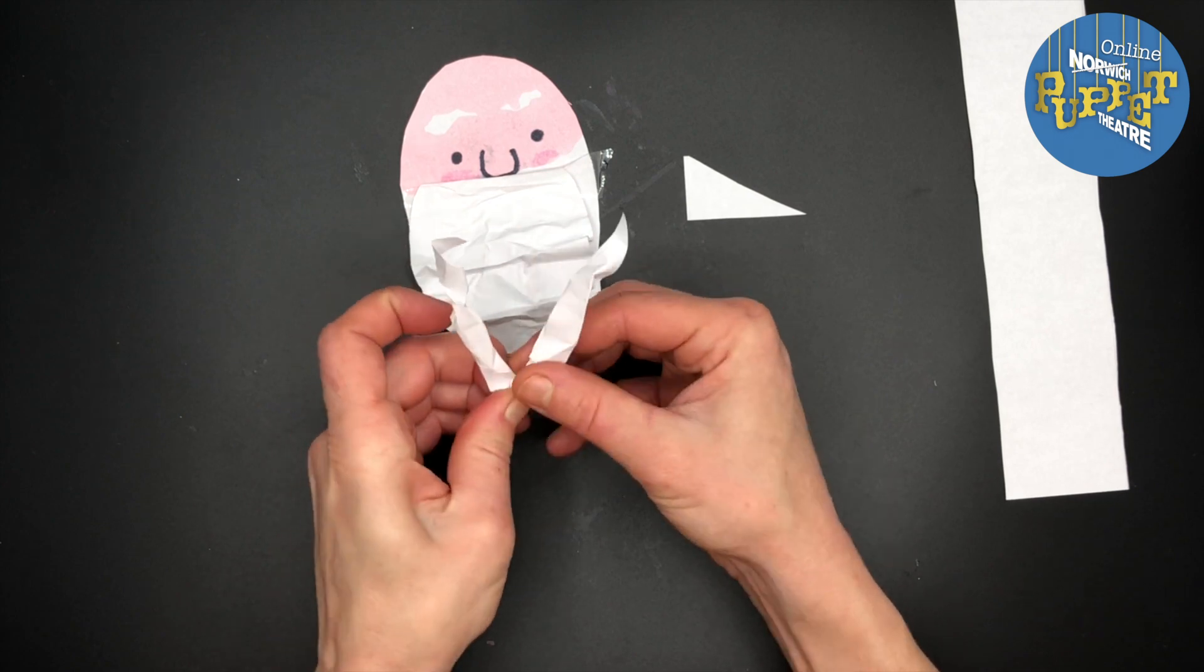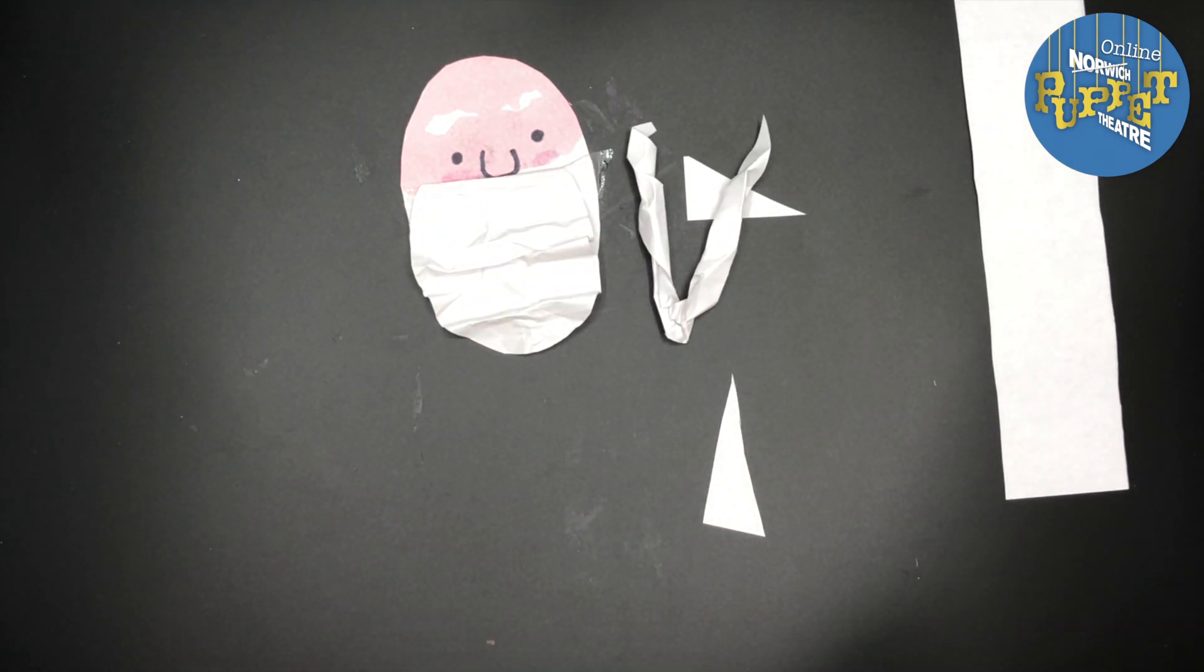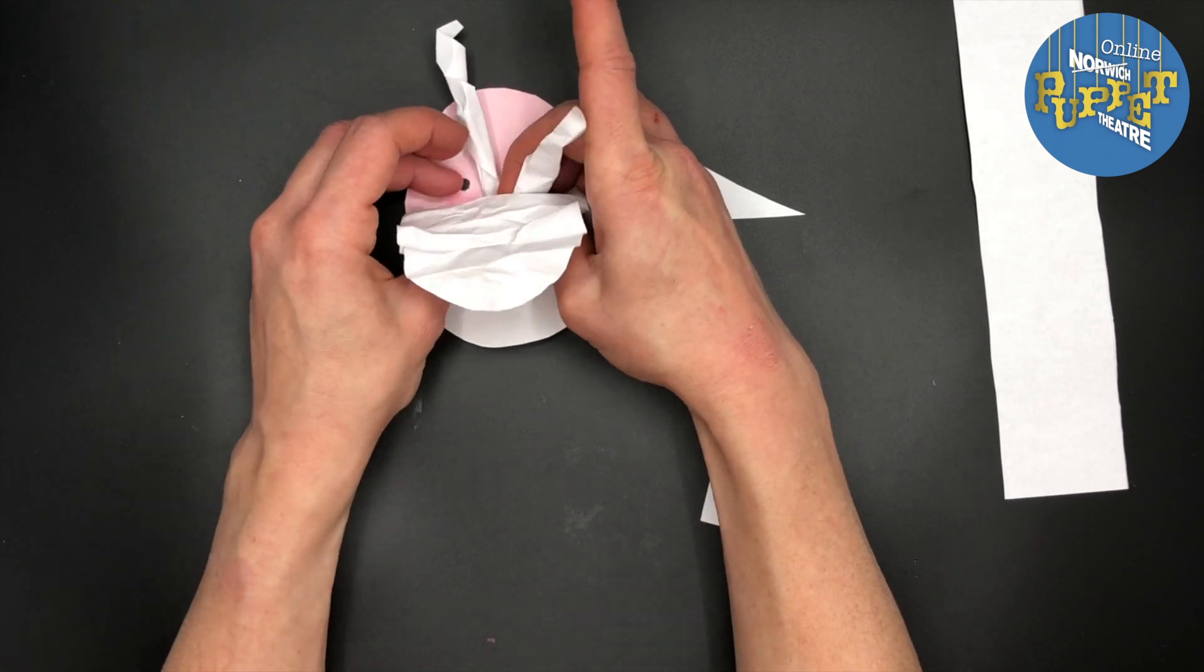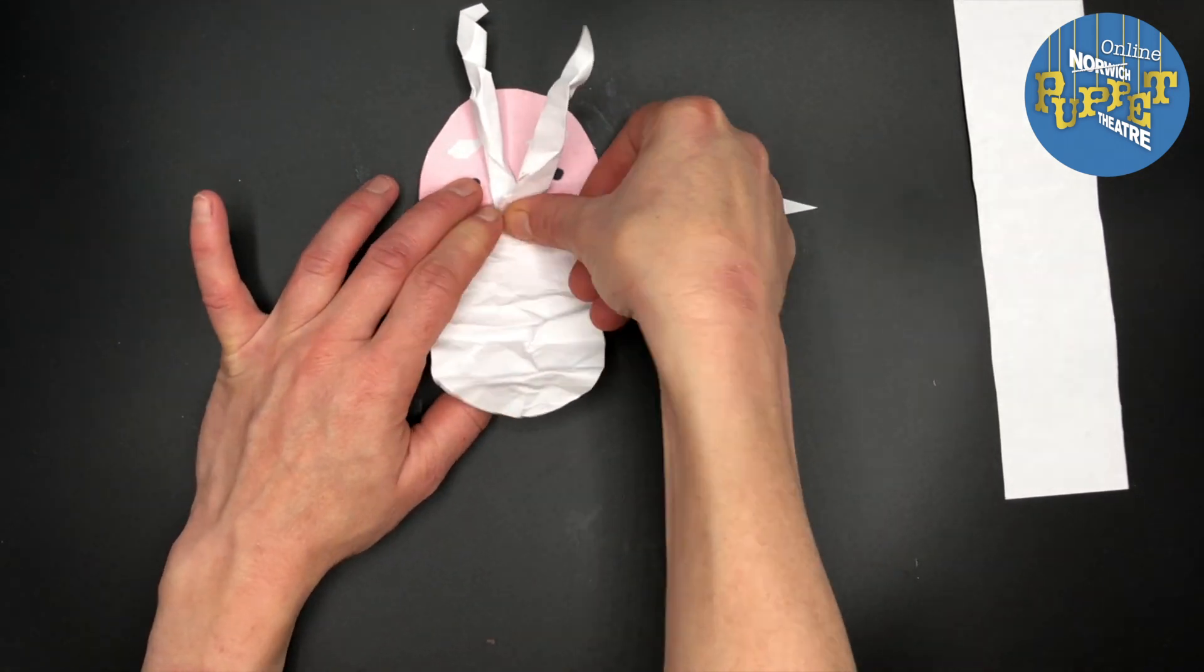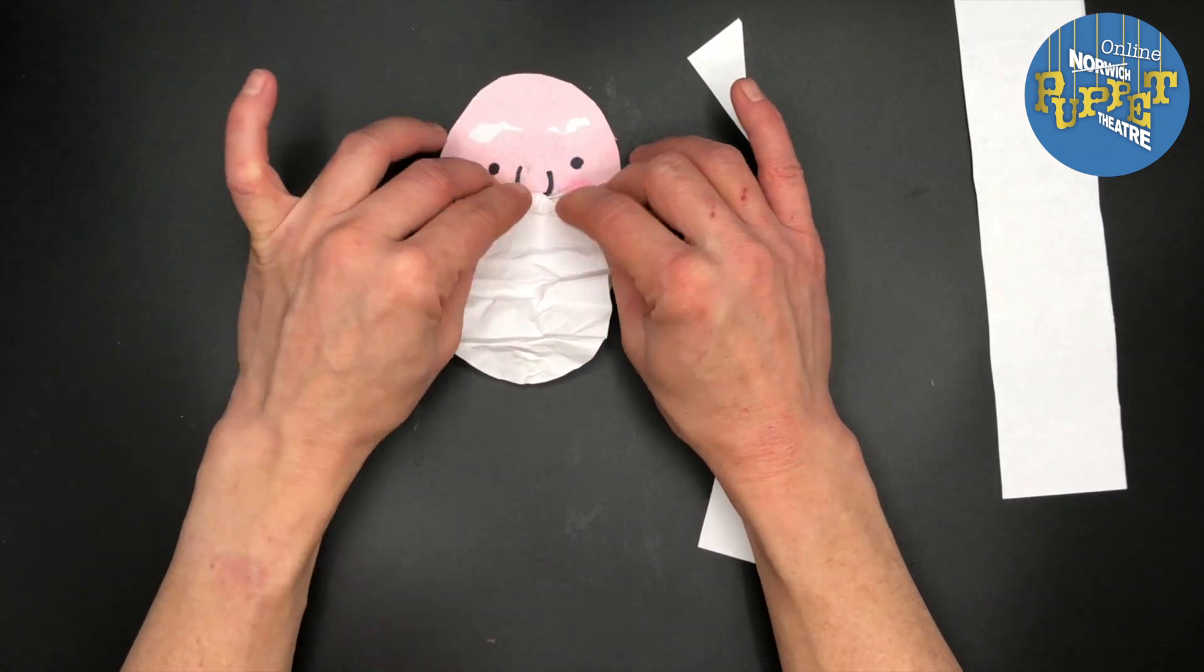Fold it in half and tape the folded edge between Father Christmas's nose and his beard. You might need to squeeze this in a little bit. Then arrange Father Christmas's moustache.